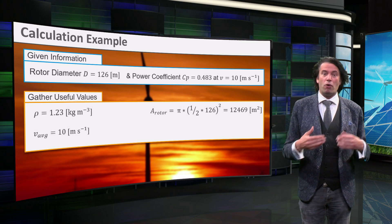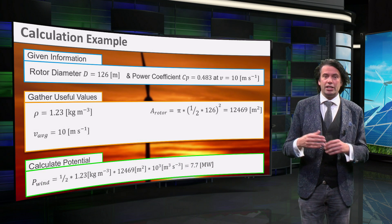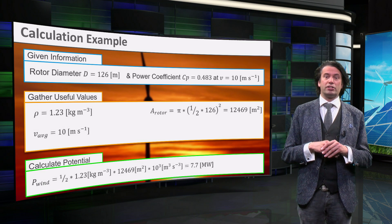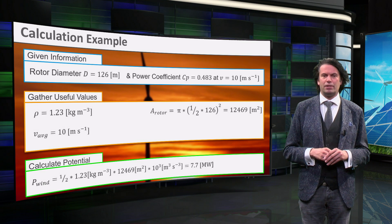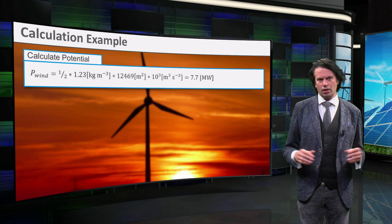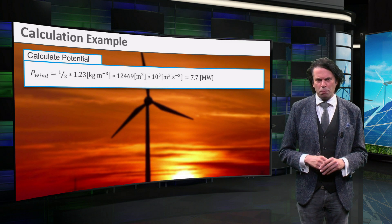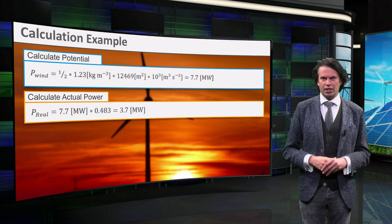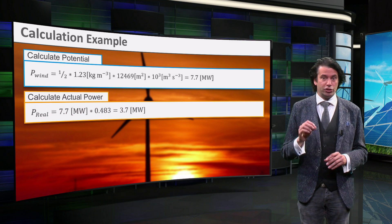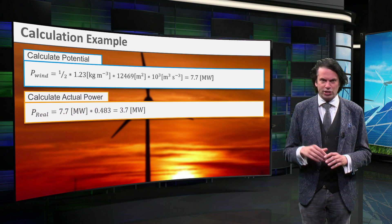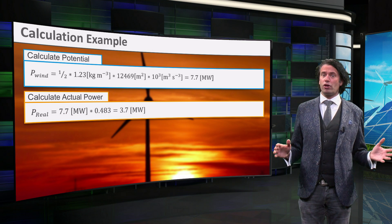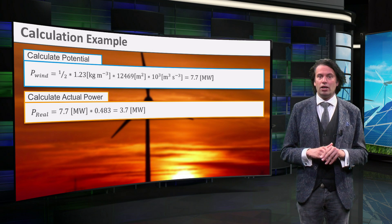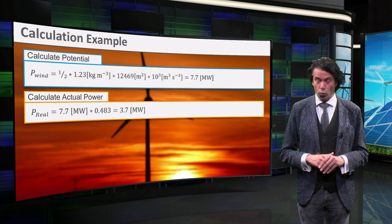The potential of the wind is then calculated using the wind power equation. P_wind equals half times 1.23 times 12.5 times 10 to the power 6, which equals 7.7 MW. The power generated by the turbine is equal to the power available in the wind multiplied by the power coefficient — in this case 7.7 MW times 0.48 — which equates to 3.7 MW. This is very close to the actual value of 3.75 MW in the datasheet of the Enercon wind turbine.